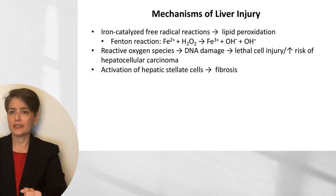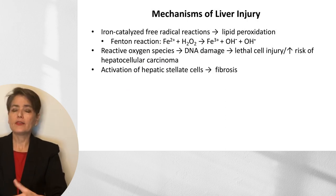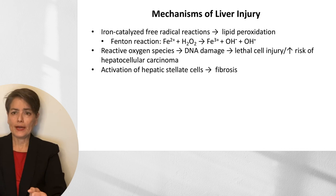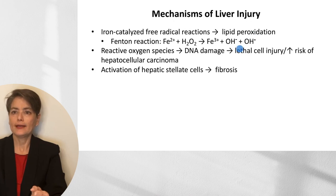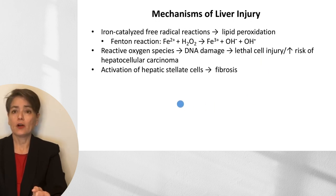Iron causes injury through iron-catalyzed free radical reactions — the Fenton reaction — in which Fe2+ plus hydrogen peroxide generates Fe3+, a hydroxyl ion, and a hydroxyl radical. This radical causes lipid peroxidation and DNA damage, leading to lethal cell injury and an increased risk of hepatocellular carcinoma. Iron itself can also activate hepatic stellate cells, causing fibrosis.